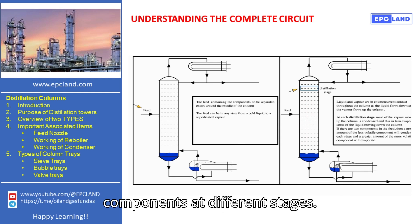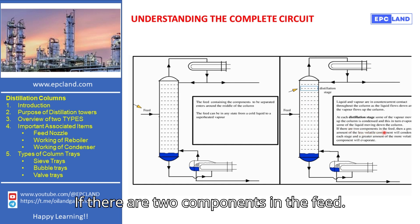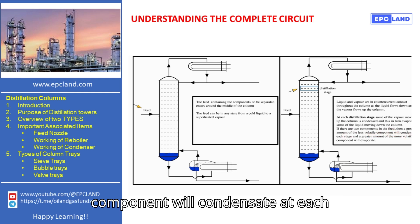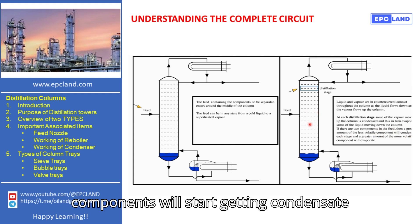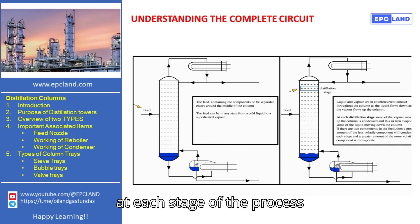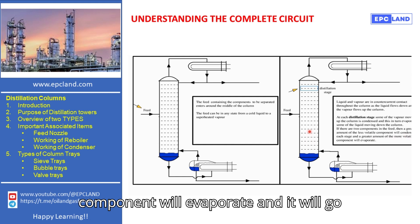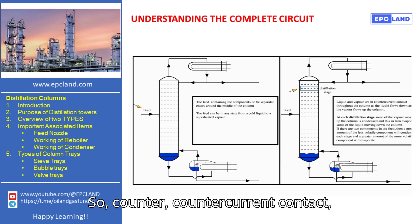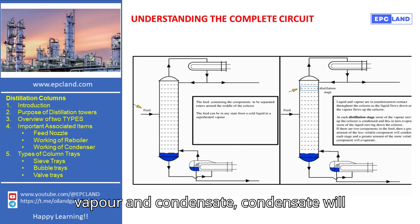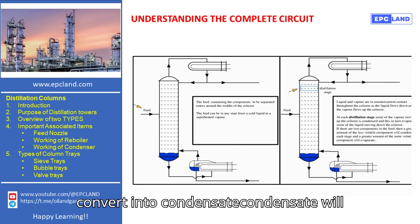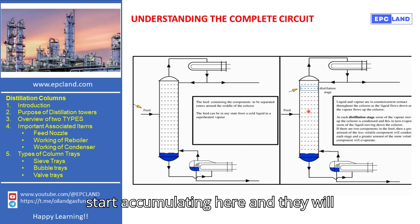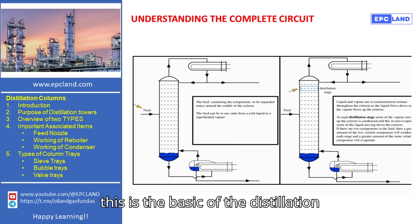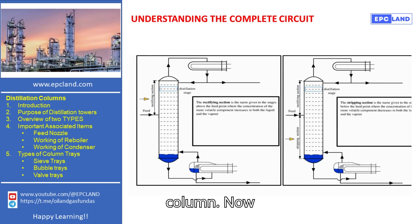If there are two components in the feed, the greater amount of less volatile component will condense at each stage. So less volatile components will start getting condensed at each stage of the process, and a greater amount of the more volatile component will evaporate and go to the upper section of the column. In counter-current contact, condensate will convert into vapor and vapor will convert into condensate — condensate accumulating at the bottom, vapors accumulating at the top.